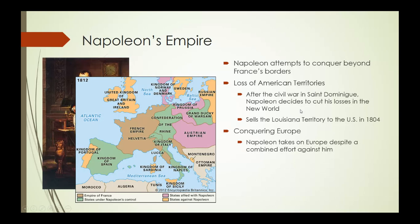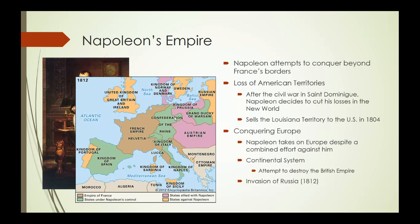In doing so, he really stretches himself too thin. He institutes the Continental System — his attempt to destroy the British empire by not allowing British merchant ships to dock at French or French-controlled ports, which by 1812 is a whole lot of Europe. You can see how Napoleon represents this existential threat to the British empire, which explains why the British are so strongly against him and willing to fight against him.